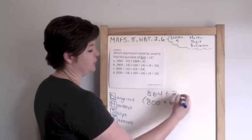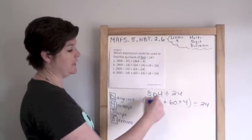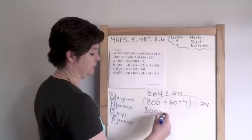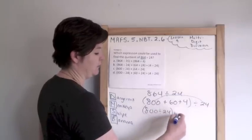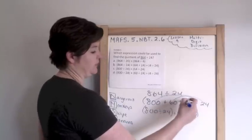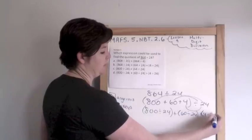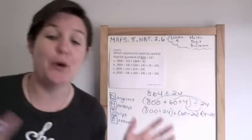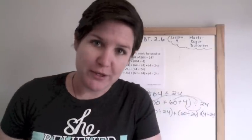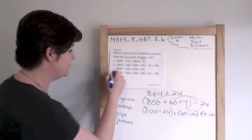So 864 becomes 800 plus 60 plus 4, divided by 24. And then you're going to take each one and distribute it with the 24. So 800 divided by 24, plus 60 divided by 24, plus 4 divided by 24, which would end up being a fraction. Just take it, expand it, and then distribute it. It's using the distributive property to solve it. I bet you see one like this on the test, so study it. So our answer would be D.